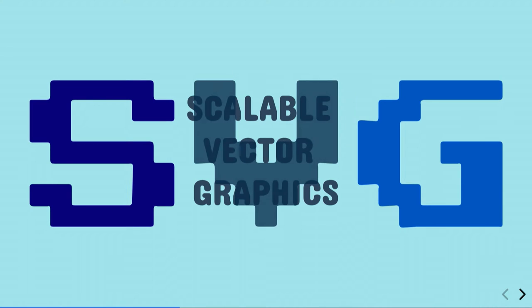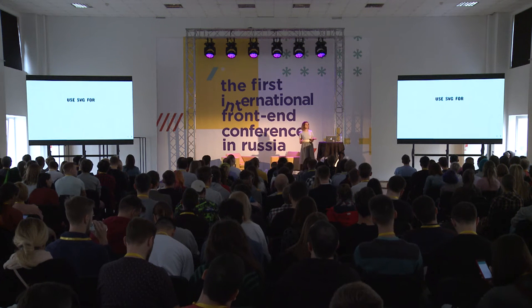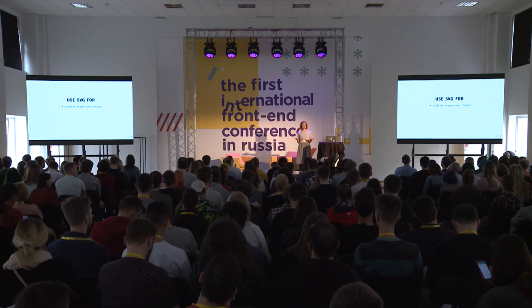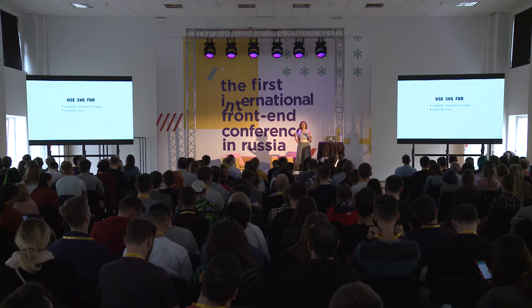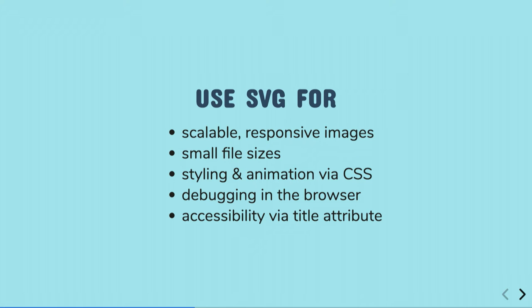SVG stands for Scalable Vector Graphics. You should use it for scalable, responsive images and to reduce file sizes when it's the right format. For vector files it's a lot better than PNG or JPEG because it's smaller — but for a whole photograph you'd probably use JPEG. What's really cool about SVG is that you can style and animate it with CSS, and you get debugging in the browser where you can inspect, remove, and interact with every element.